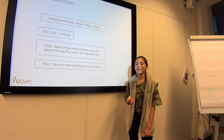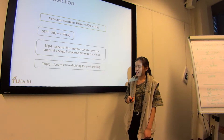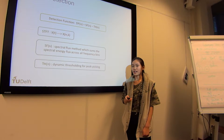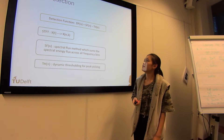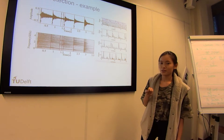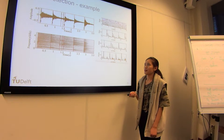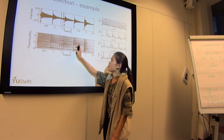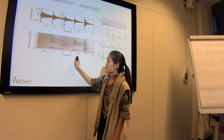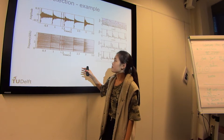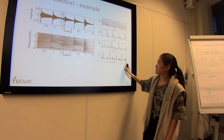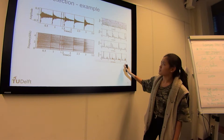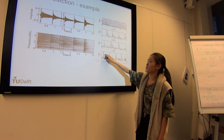The next stage is onset detection, where an onset refers to the start of a sound in music. Looking at the next slide, here is the music signal and the red lines mark the onset positions. This shows, for each separate instrument, how we find the peak at the onset.